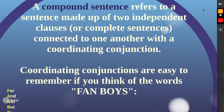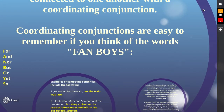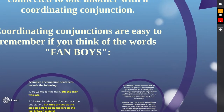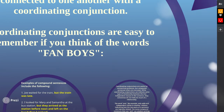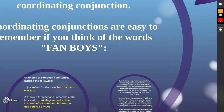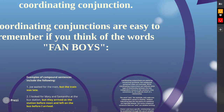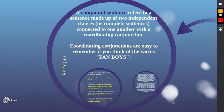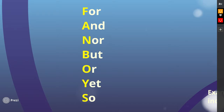Coordinating conjunctions are easy to remember if you think of the word FANBOYS — or the two words: FAN and BOYS. It's an acronym: For, And, Nor — FAN — But, Or, Yet, So — BOYS.